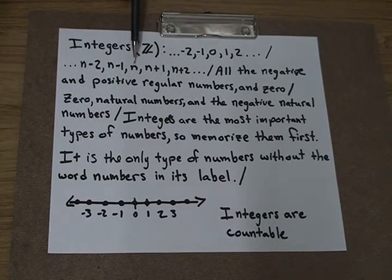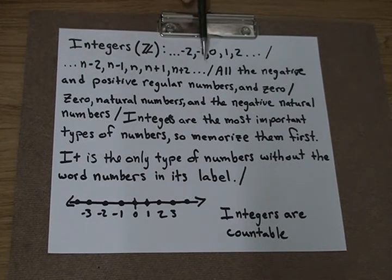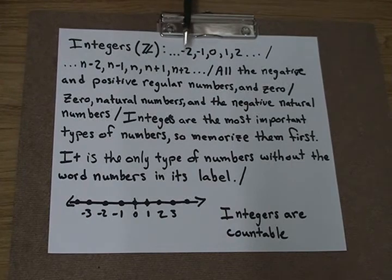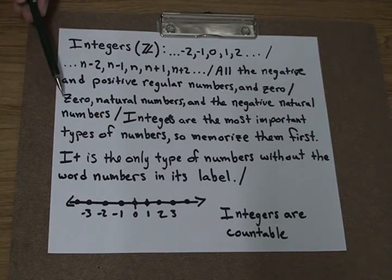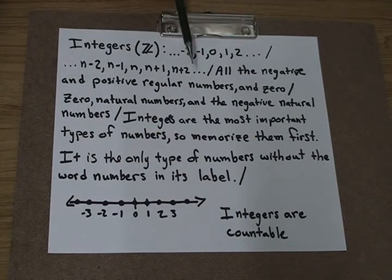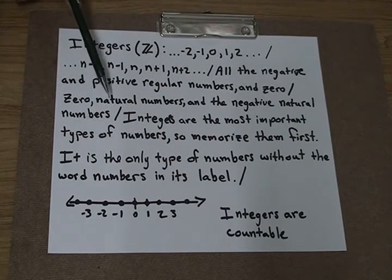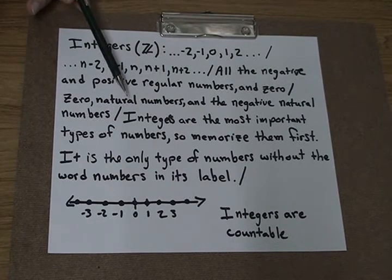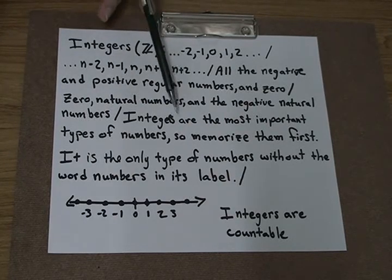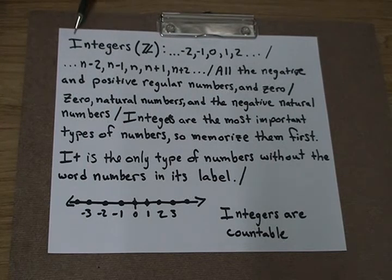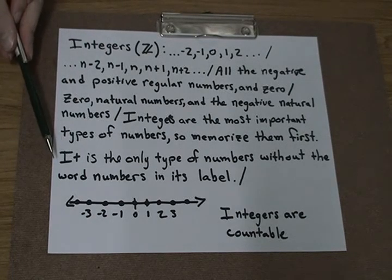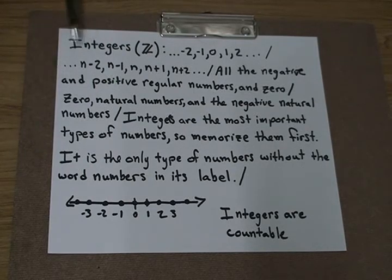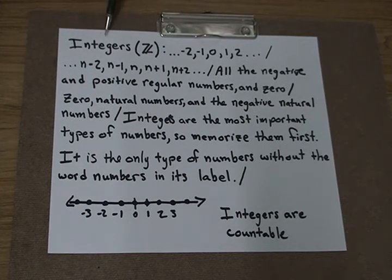The integers are all the negative and positive regular numbers and 0. As a mathematical definition, we would use the vocabulary that we now have. Integers are 0, the natural numbers, and the negative natural numbers. Integers are the most important types of numbers to learn. These are our foundation numbers, negatives and positives, so memorize them first. Integers, there's no real trick to learning them, so it's important to memorize them first. This is also the only type of numbers without the word numbers in its label. They're just called integers. It's also the first type of numbers that has a letter representing it that doesn't begin with it.